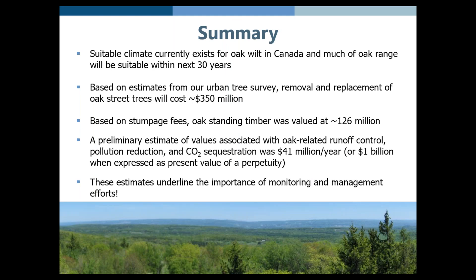In summary, it does look like there's suitable climate for oak wilt and its insect vectors in Canada across much of the oak range within the next 30 years. Based on estimates from our urban tree survey, roughly $350 million is associated with removal and replacement of street trees, roughly $126 million with standing oak timber, and $41 million per year — or about $1 billion as a present value of a perpetuity — in ecosystem service values. These estimates underline the importance of monitoring and ongoing management efforts, and the take-home message is that there is a lot of value in oaks, which is an important message to convey to management agencies and the general public.